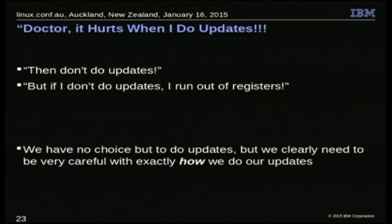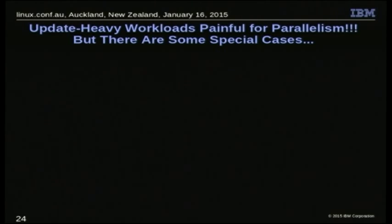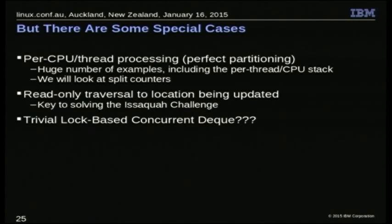We really don't have any choice but to do updates at some point. But we have to be very careful about how we do them. There are special cases where you can do updates at full machine rate, used heavily in the Linux kernel and other places — I first came across this in the early 90s and it was considered old then. I'm talking about per-CPU things like split counters, read-only traversal to the location being updated, and the trivial lock-based concurrent deque I teased earlier.